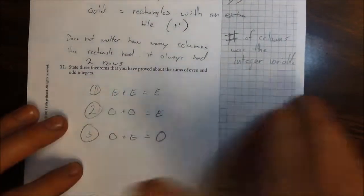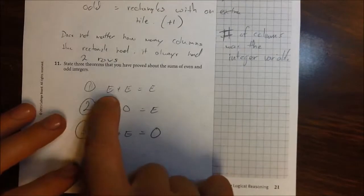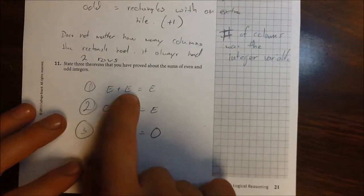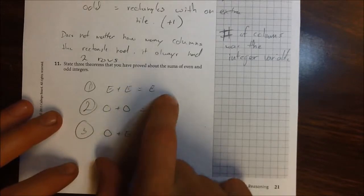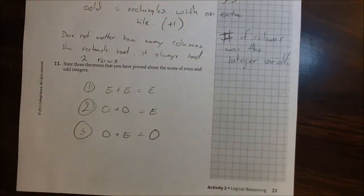They probably wanted you to write it out and say an even integer plus an even integer will have the sum that is an even integer, and so on and so forth. But I feel like I've said it so many times. We get the point. We get the point.